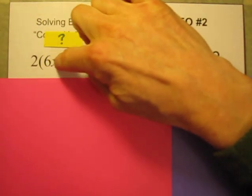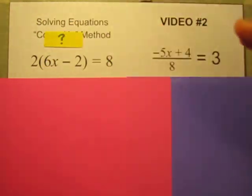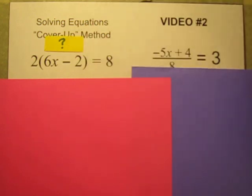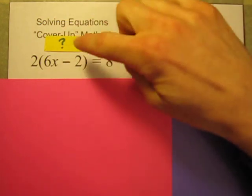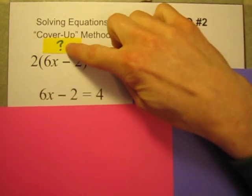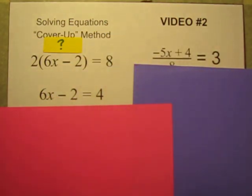So six times x minus two must be equal to four. If you want, you can just keep that filed away in your mind and keep working, or you could write it down. Six times x minus two equals four.